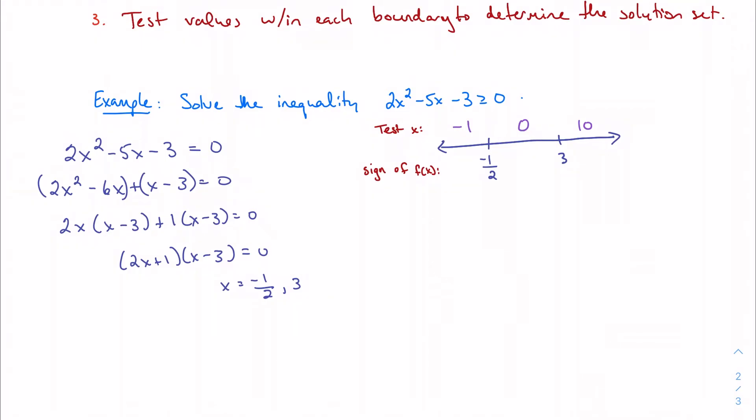We're going to test all of these. If I plug in negative one, I'm going to get 2 times negative one minus three times zero. We don't really need an exact number; I just need to know if the sign is positive or negative. We get 2 plus 2 minus 3, which is positive.